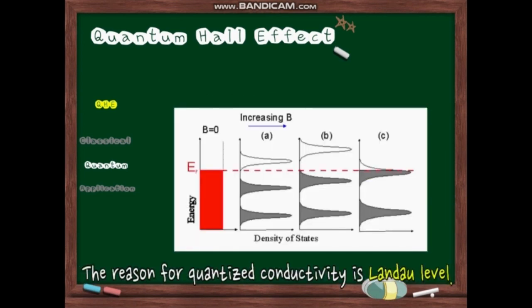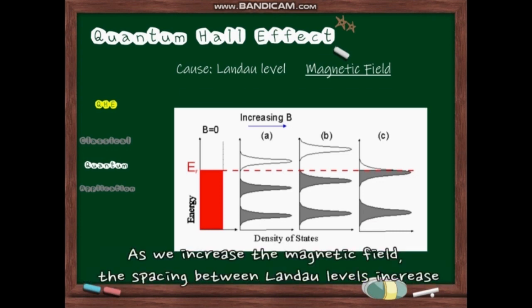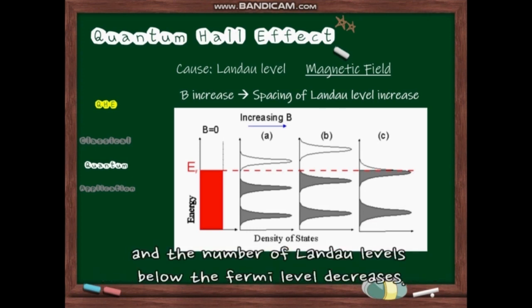The reason for quantized conductivity is Landau level. Landau level refers to quantized energy of charged particles when a magnetic field is present. As we increase the magnetic fields, the spacing between Landau levels increases and the number of Landau levels below the Fermi level decreases.